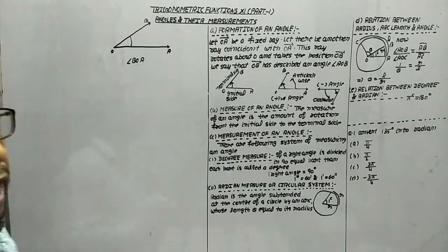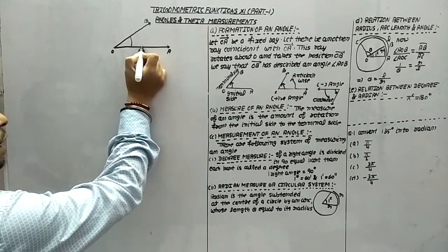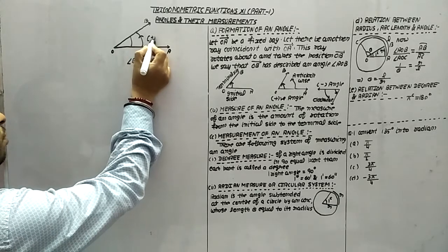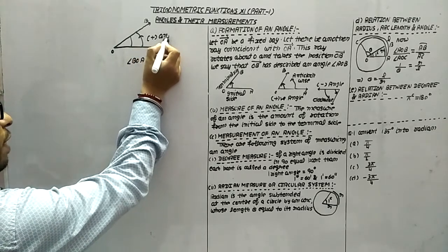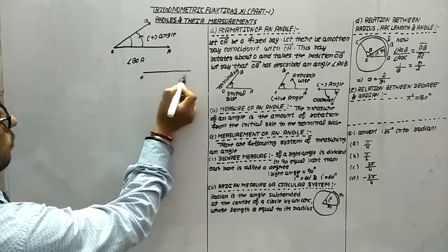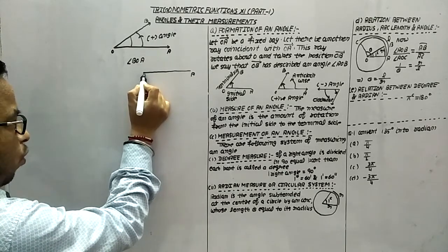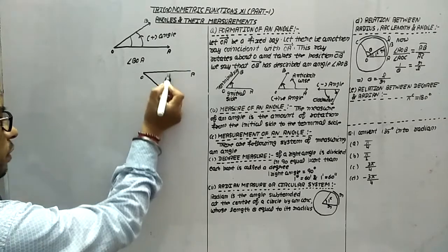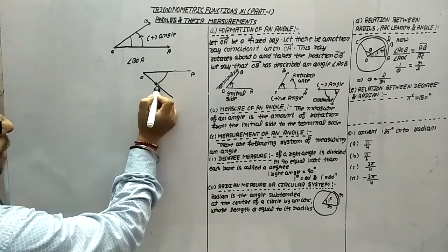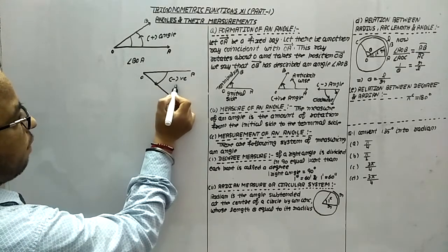We have two types of angle. If the rotation is in anti-clockwise sense, then whatever angle is formed that is known as the positive angle. And if we have a fixed ray OA and OB is moving in clockwise rotation, this is called the negative angle.